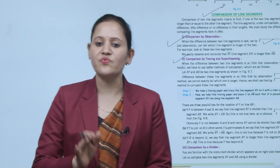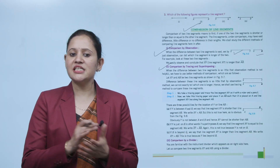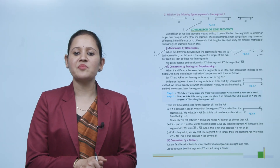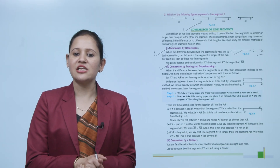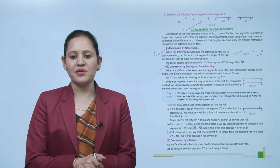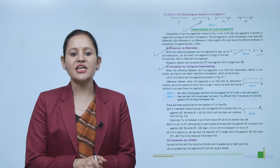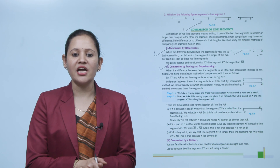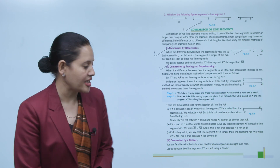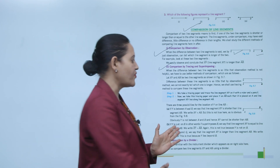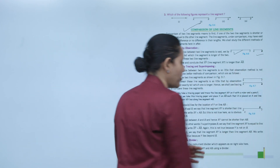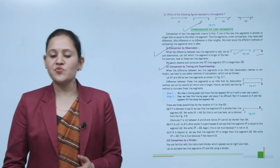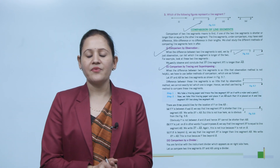If Y lies beyond B, we say that line segment XY is longer than AB, and we write XY > AB. This is true here because Y lies beyond AB, meaning XY is greater than AB.